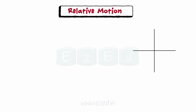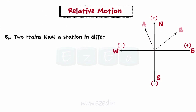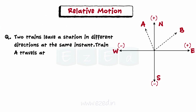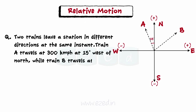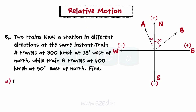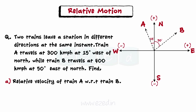Let us understand relative motion with the help of an example. Consider two trains that leave a station in different directions at the same instance. Train A travels at 300 km/h at 15 degrees west of north, while train B travels at 400 km/h at 50 degrees east of north. Find the relative velocity of train A with respect to train B, and the separation of train A after 3 minutes.